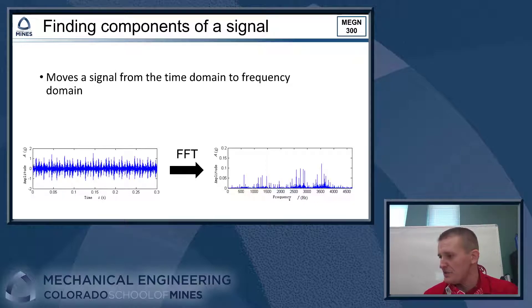After we do the Fourier transform, we end up with a graph that's still amplitude on the y-axis, but it has frequency on the x-axis instead. So we normally call this something like a power spectrum is a common name for the result of the Fourier transform.